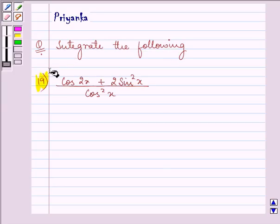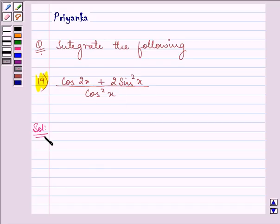Now the 19th function which is given to us is cos 2x plus 2 sin squared x divided by cos squared x. Let us quickly integrate this function.